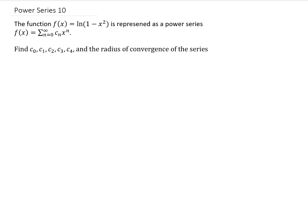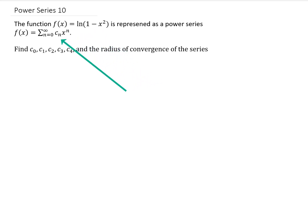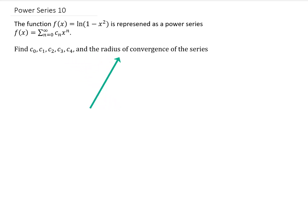In this problem we're given a function, the natural log of 1 minus x squared, and this can be represented as a power series. What we'd like to do is find the first five coefficients of that power series, and also find the radius of convergence of this power series.